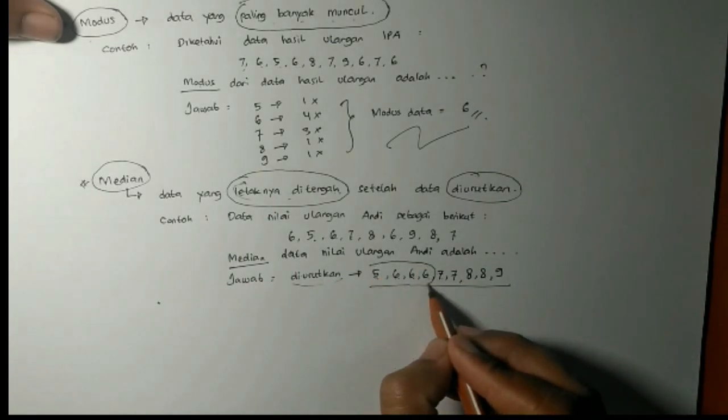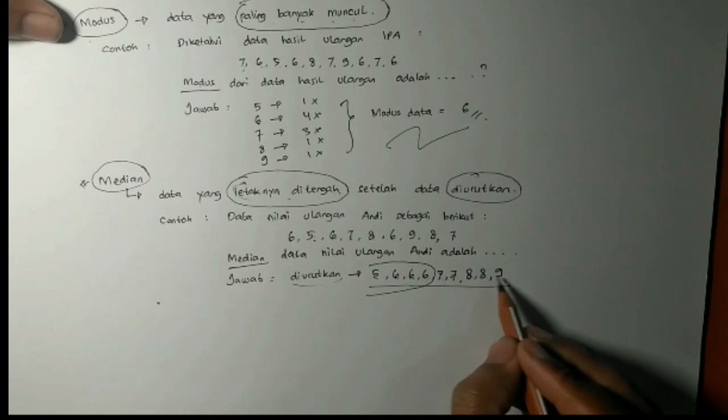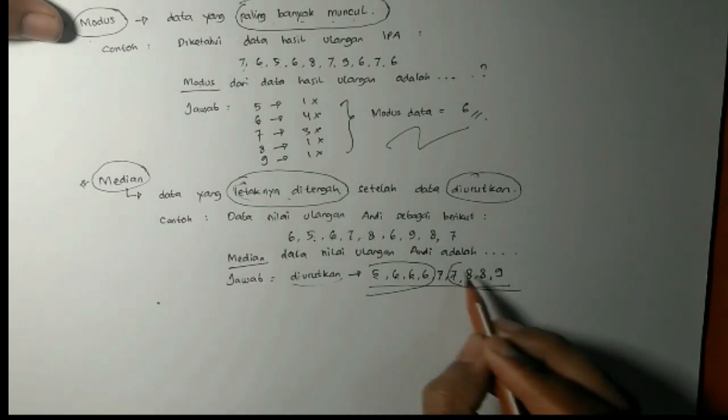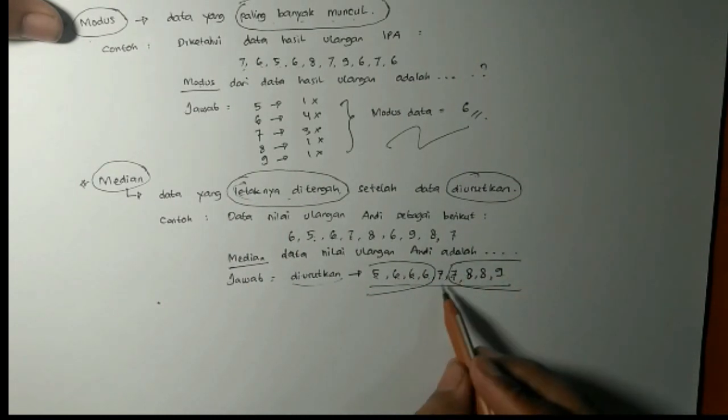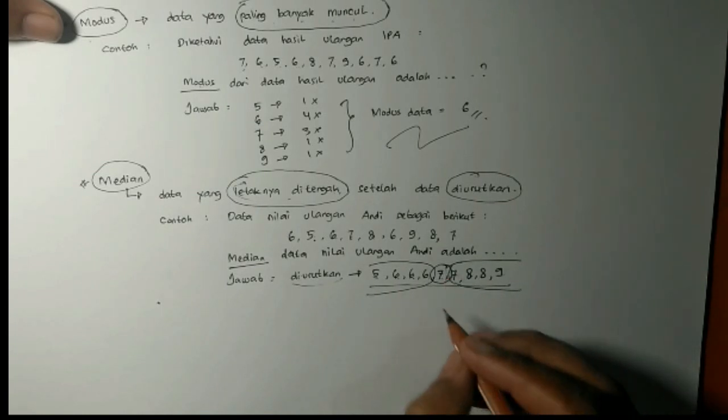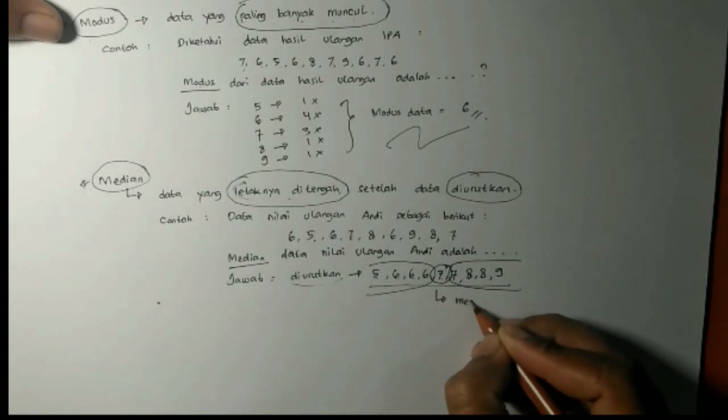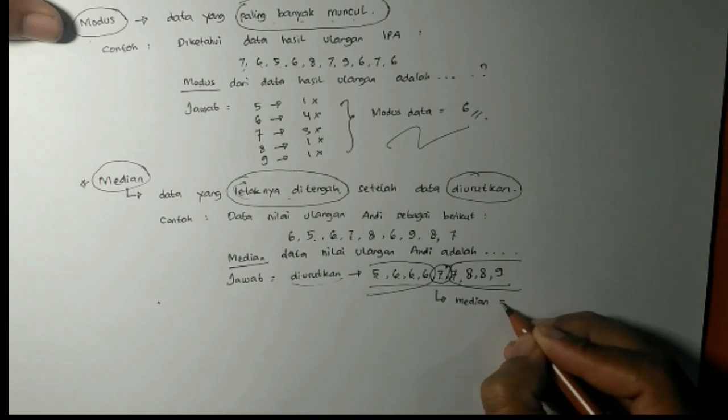Sebelah kiri 4 data. Sebelah kanan 4 data. Nah, yang tengah-tengah ini 1 data yaitu 7. Berarti medianya ya 7 ini. Jadi medianya adalah 7.